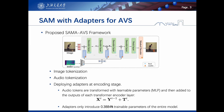As the figure shows, the adapters are responsible for injecting audio information into the feature encoding process. Specifically, the audio tokens are transformed with learnable parameters and then added to the outputs of each transformer encoder layer. After N layers of transformer encoder with adapters, the obtained deeply fused audio-visual embeddings are fed to the neck layer to adjust the channel dimension. Finally, the embeddings from the neck layer are fed to the mask decoder to perform mask prediction.